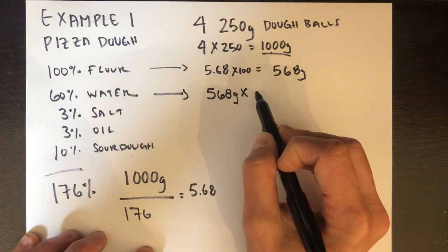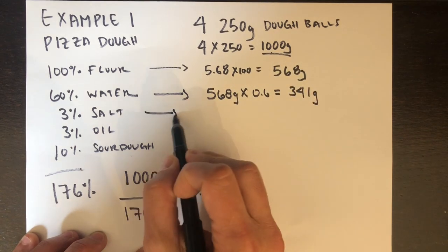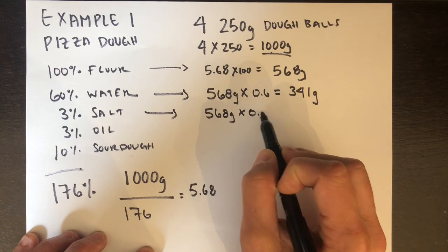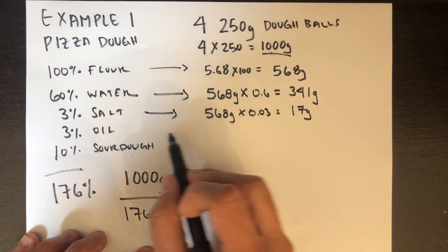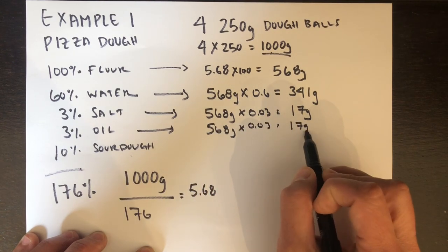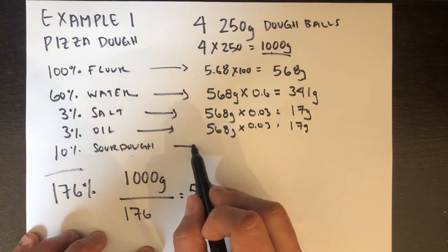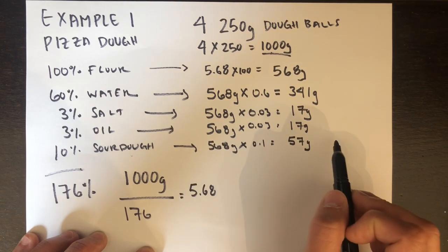Now remember everything in percentages is based off of flour. So for all my other ingredients, I just do the quick math, 568 times the percentage. That's going to give me the weight of each ingredient that I need. For water, that's 341 grams. For salt and for oil, both since they're both at 3%, that's 17 grams. And for my sourdough, that's an easy one, 10%. That's going to give me 57 grams.